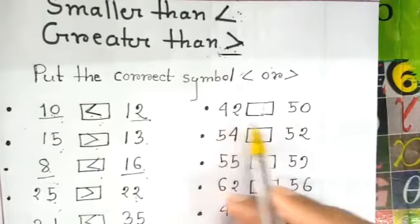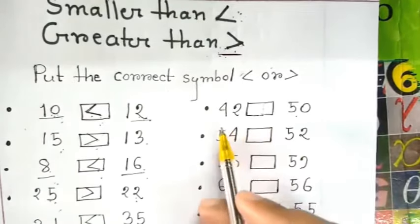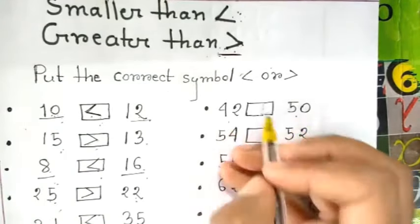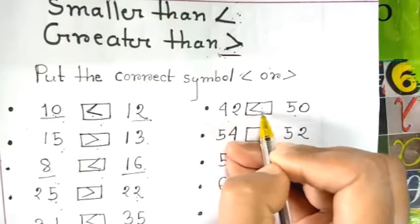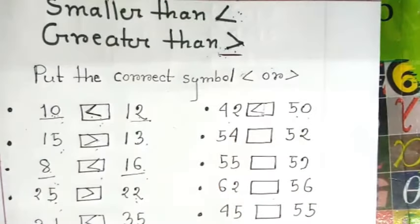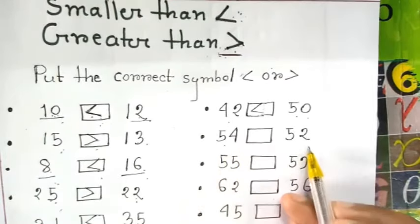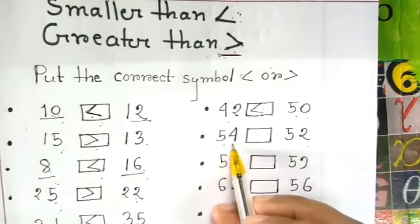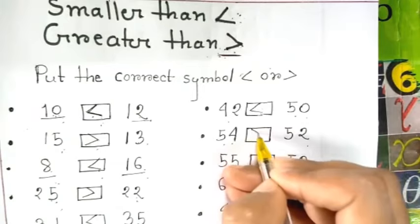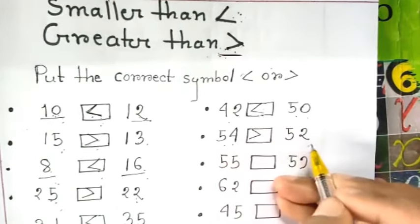42, 50. 42 is smaller than 50. 54, 52. Now 54 is greater than 52.